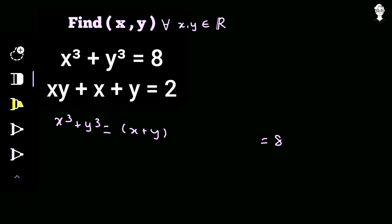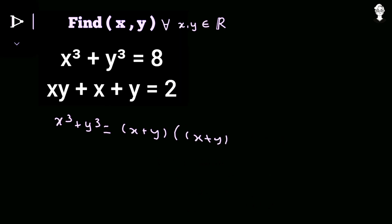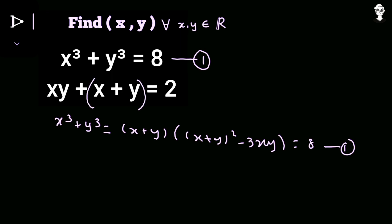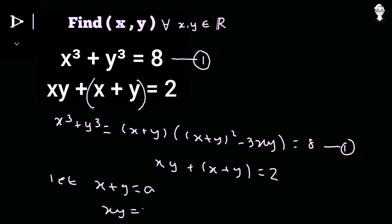We now replace x² + y² − xy with (x + y)² − 3xy, giving us (x + y)·[(x + y)² − 3xy] = 8 as the adjusted first equation. The second equation is xy + x + y = 2, which we can write as xy + (x + y) = 2. Let x + y = a and xy = b.